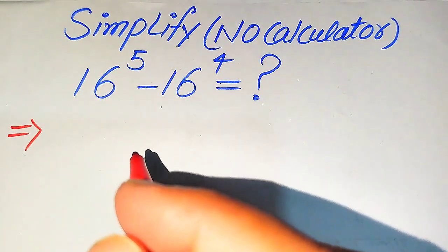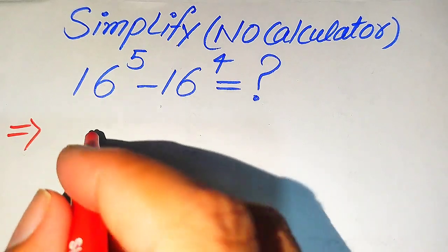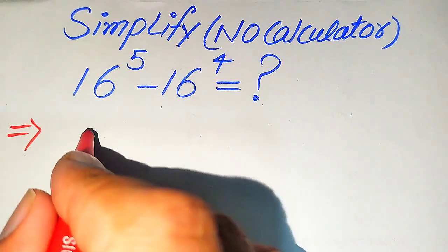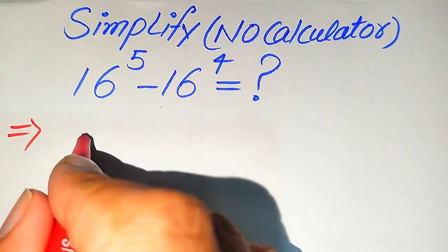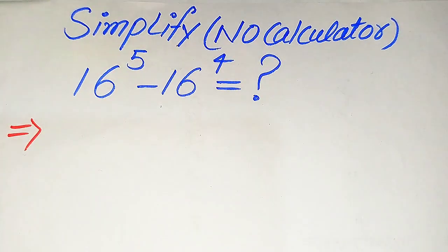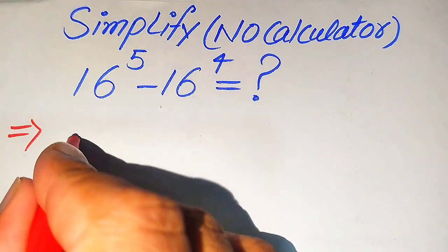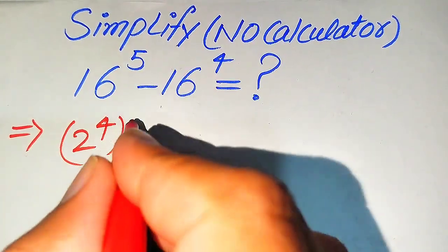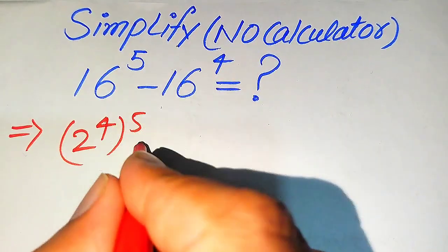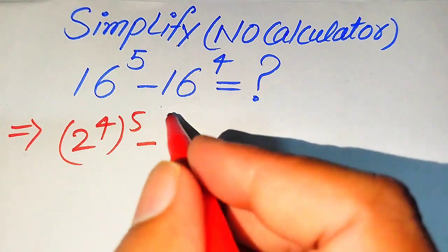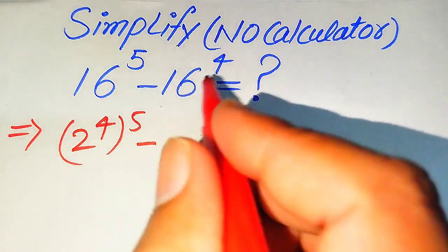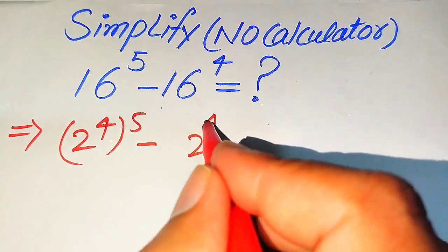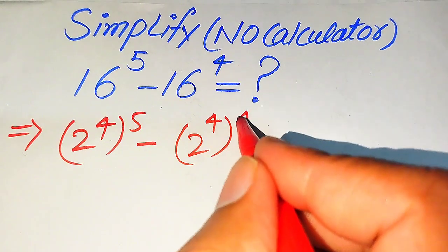First, we write 16 in the form of prime factors. The prime factors of 16 are 2 to the power of 4. So 16^5 is written as (2^4)^5, and similarly 16^4 is written as (2^4)^4.